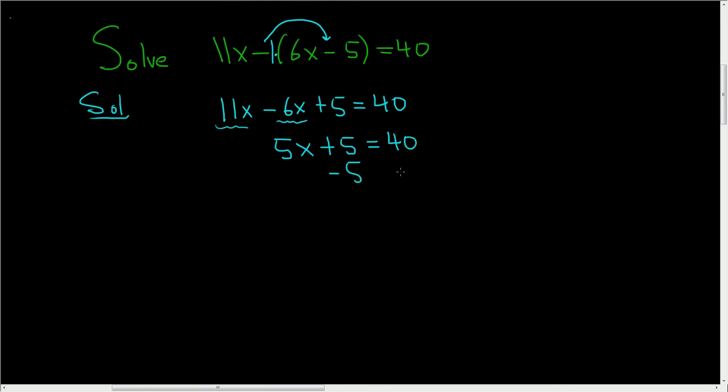Subtract 5 from both sides. So we get 5x equals 35.